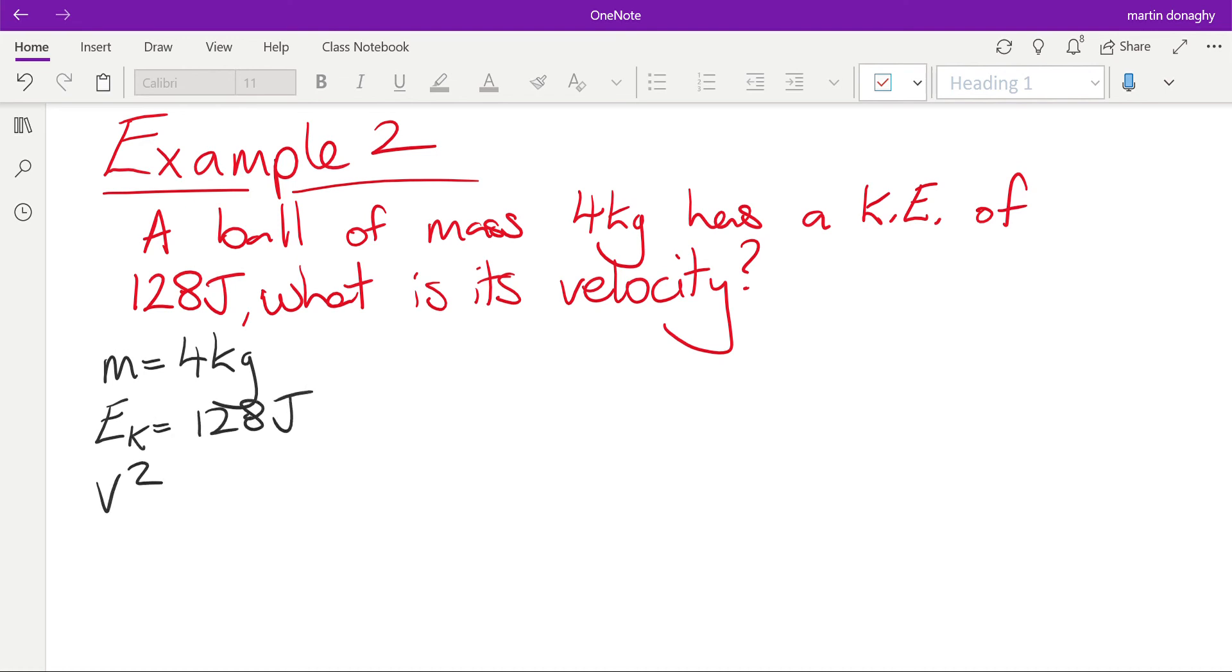Write out your equation and put in the values that you know. So our kinetic energy is 128. That's one-half times four times v squared. One-half times four is just two. Divide both sides by two.